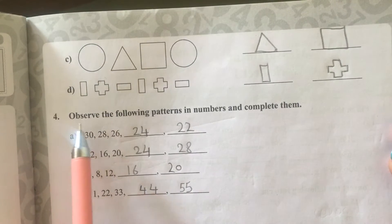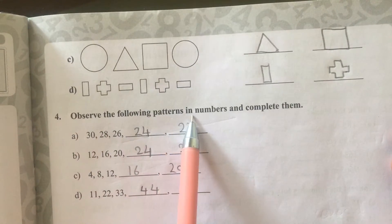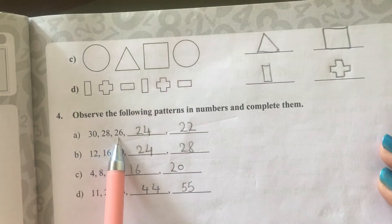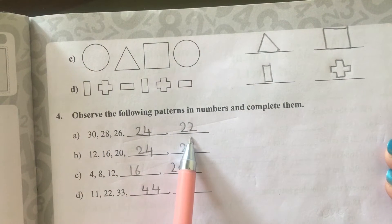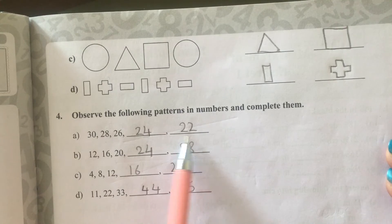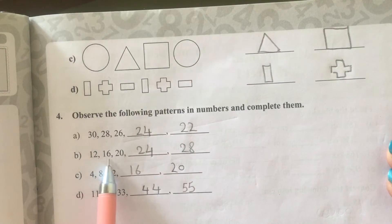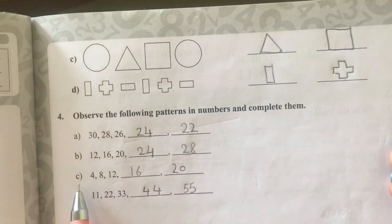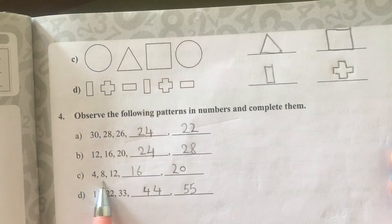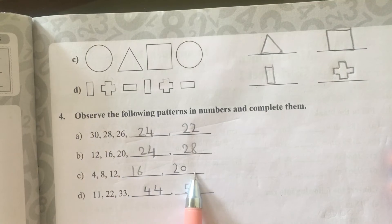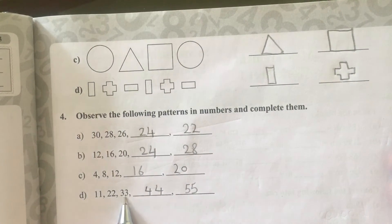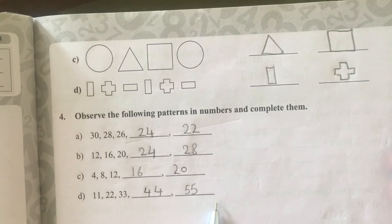And question number 4. Observe the following patterns in numbers and complete them. A. It is 30, 28, 26, 24, 22. B. 12, 16, 20, 24, 28. C. 4, 8, 12, 16, 20. And D. 11, 22, 33, 44, 55.